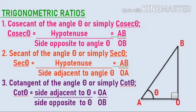The next three ratios are the reciprocals of the first three. Cosecant of angle theta, or cosec theta, is the reciprocal of sine theta. It equals hypotenuse divided by the side opposite to theta, that is AB by OB. Secant of angle theta, or sec theta, is the inverse of cos theta. Cotangent of angle theta, or cot theta, is the inverse of tan theta. It equals the side adjacent to theta divided by the side opposite to theta, that is OA divided by OB.